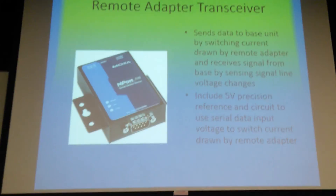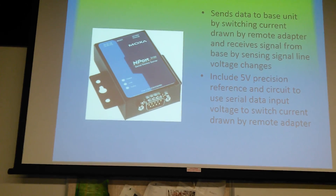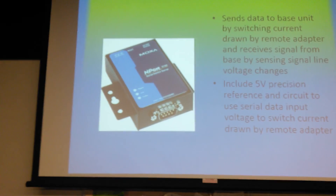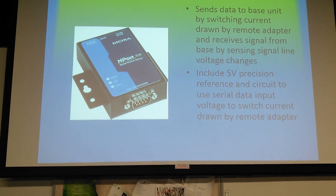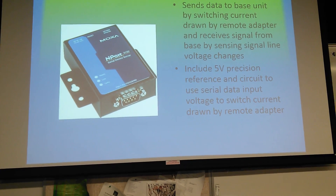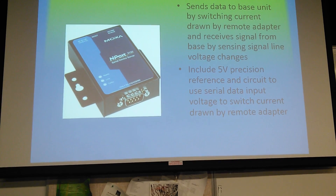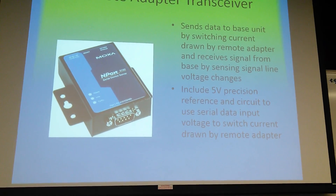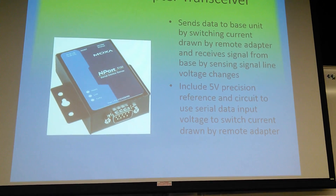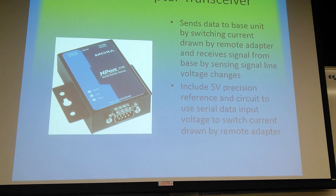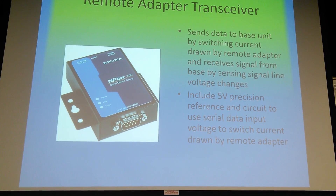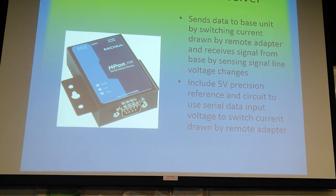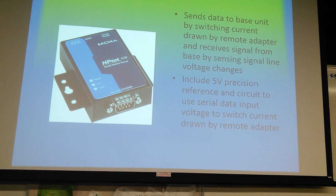Remote adapter transceiver — this is a picture of a serial device I found online. What it does is send data to the base unit by switching current drawn by the remote adapter, and receive the signal line from the base by sensing signal line voltages. There's a 5 volt precision reference circuit used to switch current drawn by the remote adapter. This uses a TL431 shunt regulator, which in combination with a voltage divider gives a constant 2.5 volts at one input pin of the comparator for the remote adapter stage.